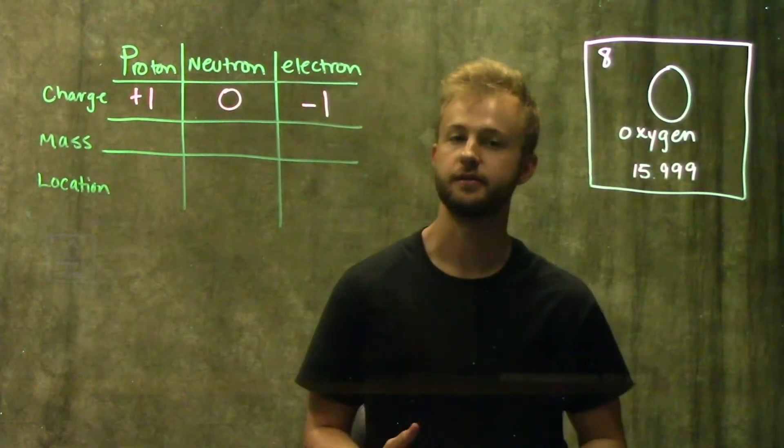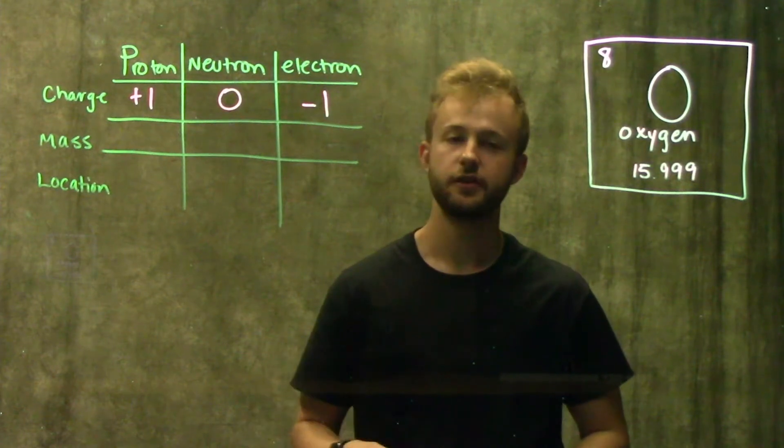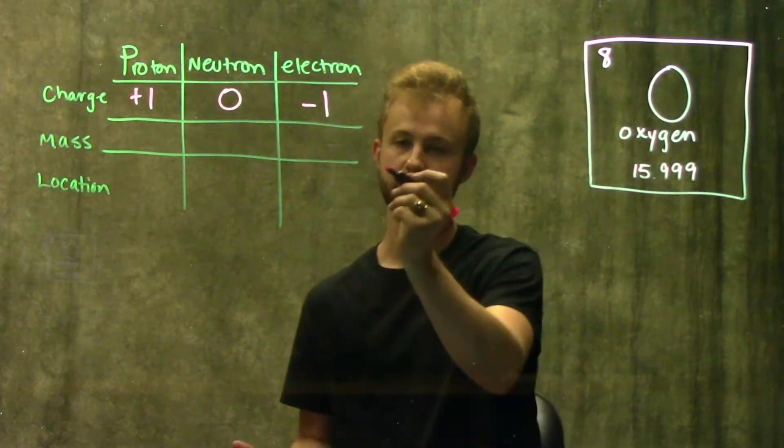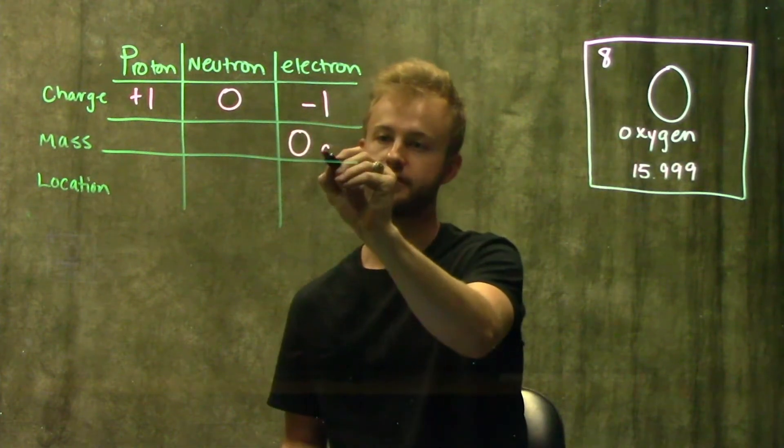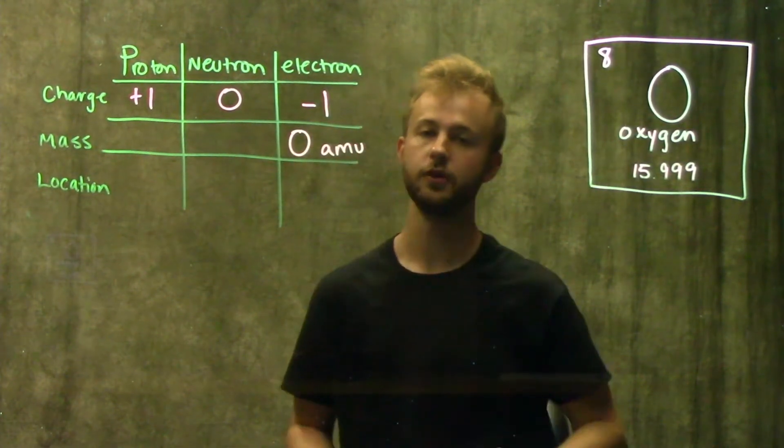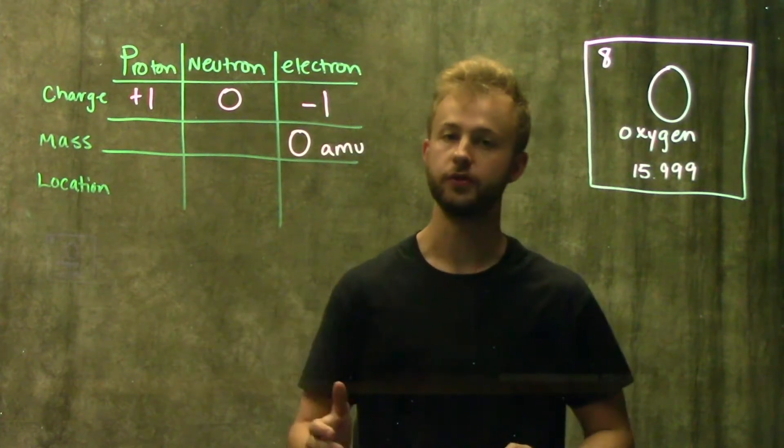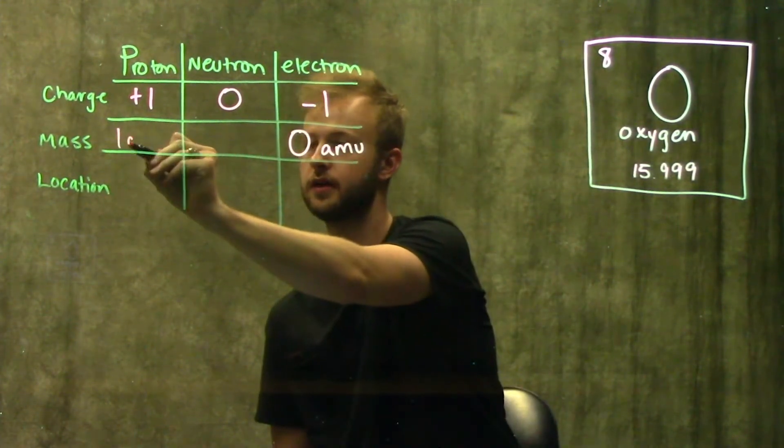So now moving on to the mass of these particles. The proton and the neutron are responsible for making up all of the mass in an atom. And so that means that the mass of an electron has to be zero AMU or atomic mass units. So the proton and the neutron are both going to have a mass of one AMU.